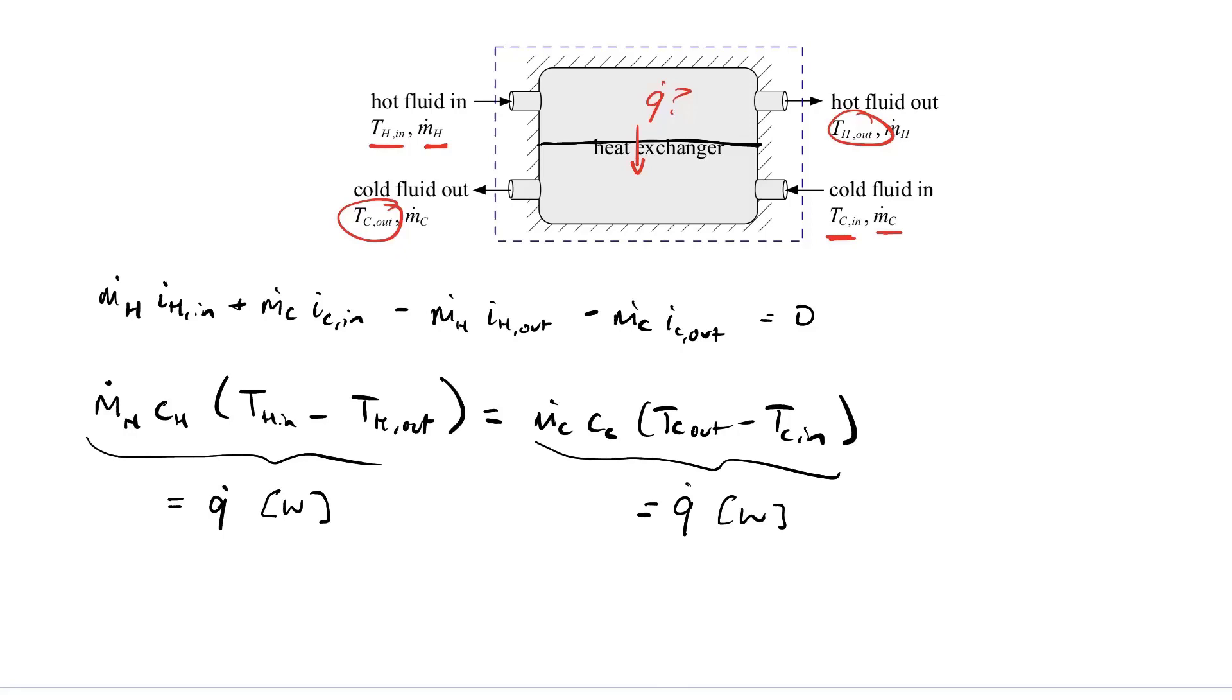Normally we also write this combination here, M dot C. This is normally written as C dot H or C dot C. That's the capacitance rate. The capacitance rate is in units of Watts per Kelvin. The capacitance rate is a measure of how much heat the fluid can absorb relative to the other flow.